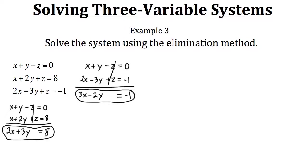Now that we have two equations with two variables — two x plus three y equals eight, and three x minus two y equals negative one — we use elimination again. The easiest variable to cancel is y. The least common multiple of the coefficients three and two is six, so we'll scale the top equation to make the y term six y, multiplying everything by two. We'll also scale the bottom equation to make the y term negative six y, multiplying everything by three.